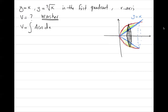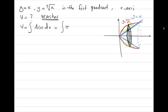To find the area of the washer, you take the larger area minus the smaller area. The outer radius is on y equals the third root of x, so you take (x^(1/3))² . The inner radius is on y equals x, so you subtract π times x squared. This gives the integrand: π[(x^(1/3))² − x²] dx.